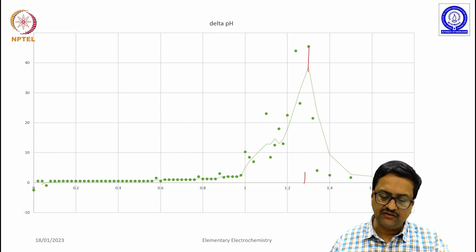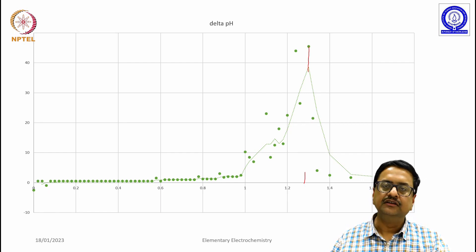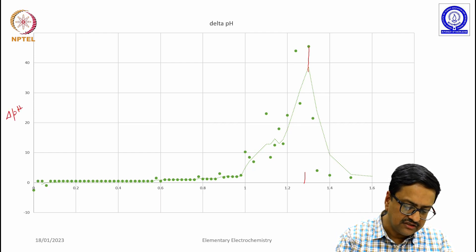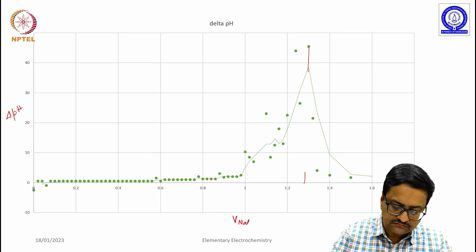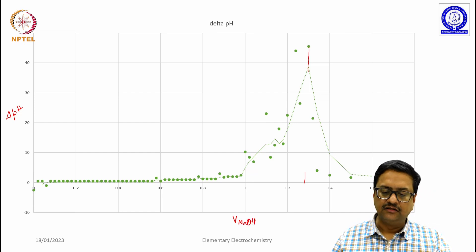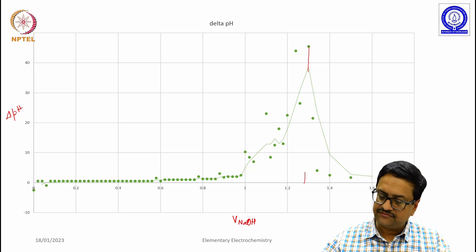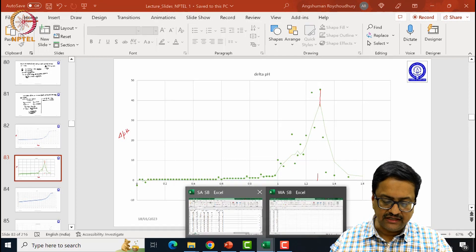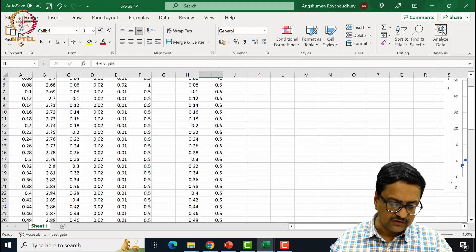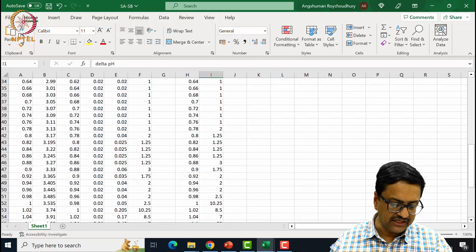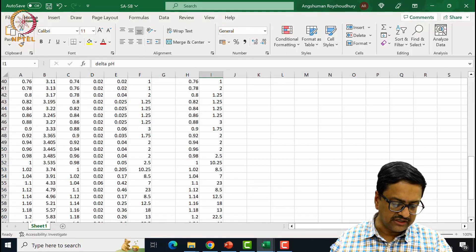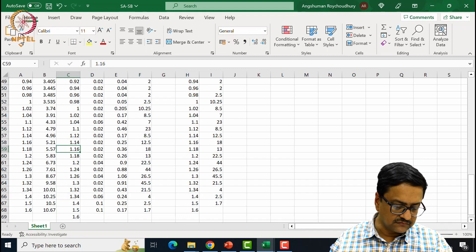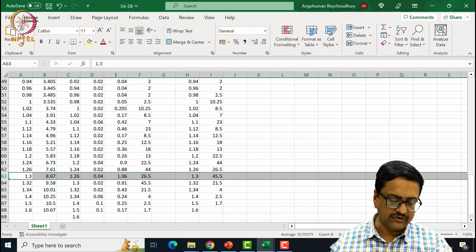So that particular reading which we have identified is 0... So here it is delta pH versus V NaOH. So that means the reading that we have seen in the excel file with the maximum value of delta pH which is your end point. This 1.3 is your end point.